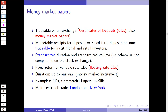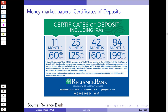Commercial papers, treasury bills, and certificates of deposits differ in that they are offered by banks, industrial companies, or central banks respectively. The main trading centers are London and New York. As an example, Reliance Bank in St. Louis advertised CDs: for an 11-month or 25-month certificate of deposit you would get 1.25% annual percentage yield — this was from 2017. You can then trade these CDs on the market.